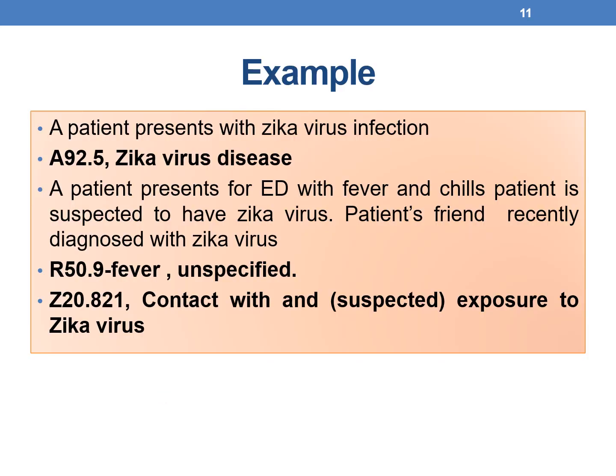Example 1: A patient presents with Zika virus infection. Since the physician documents 'Zika virus infection,' you can simply code A92.5, Zika virus infection.